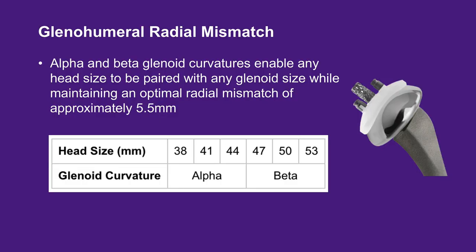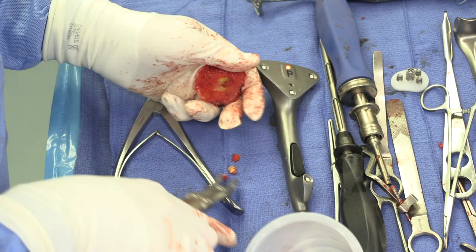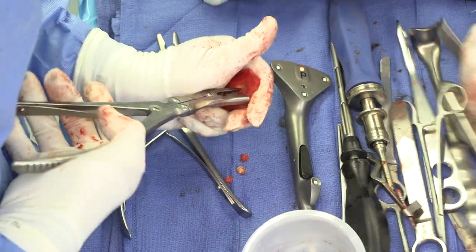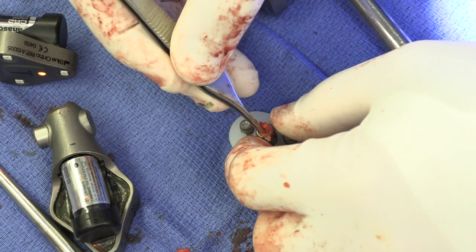Since there is a mismatch between the glenoid and humeral head components — referred to as the radial mismatch — the glenoid components are provided with two available articular curvatures named alpha and beta, so that these glenoid components can be matched with any size humeral head component ranging from 38 to 53 millimeters, while obtaining an optimal radial mismatch of 5.5 millimeters. In this case, an alpha-curvature glenoid was selected based upon the size of the removed humeral head. Cancellous bone from the humeral head is used to fill the bone cage.